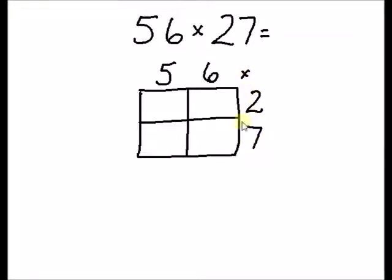As you can see we have two digits going down and two digits going across. Next we draw our diagonal lines.